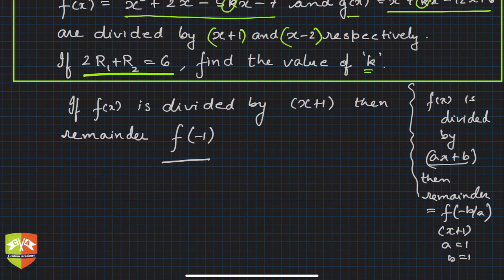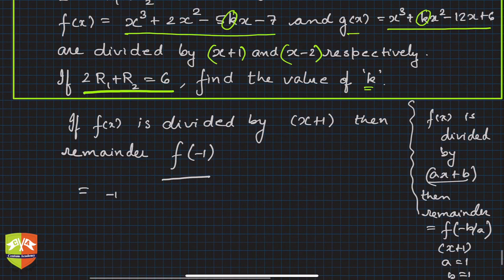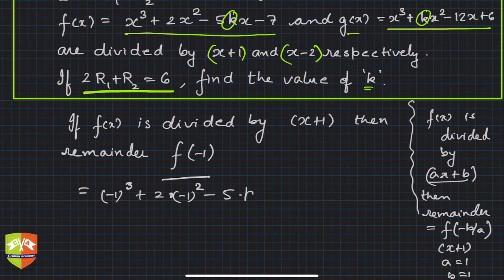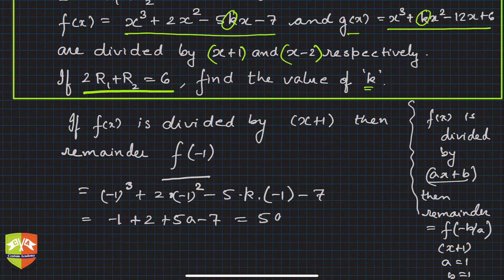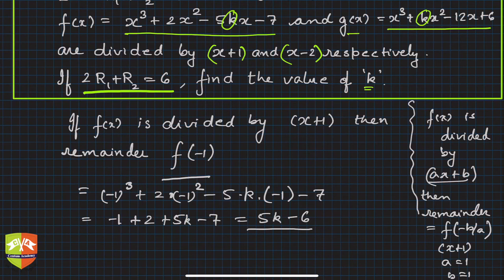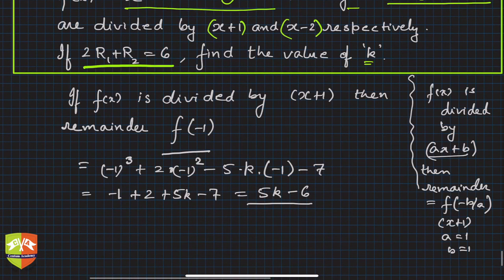Let's calculate f(−1): it is (−1)³ + 2(−1)² − 5k(−1) − 7, which gives −1 + 2 + 5k − 7. That simplifies to 5k − 6. So r1 = 5k − 6.